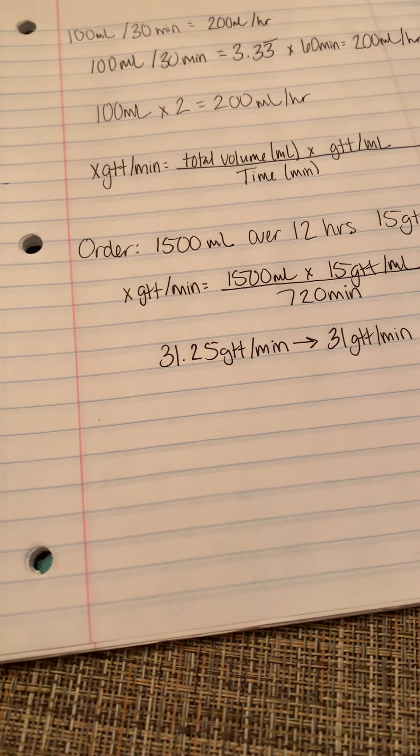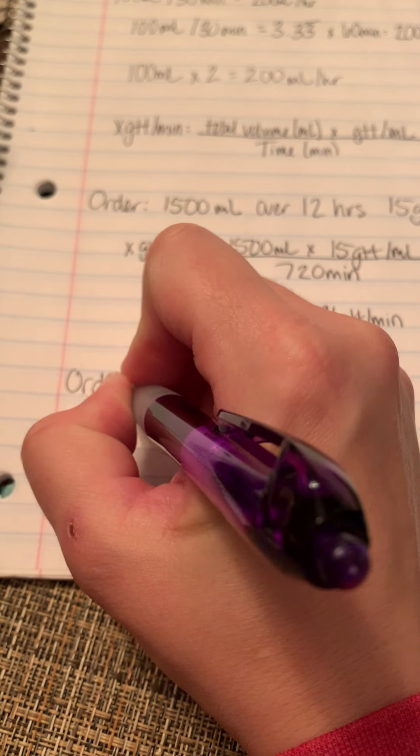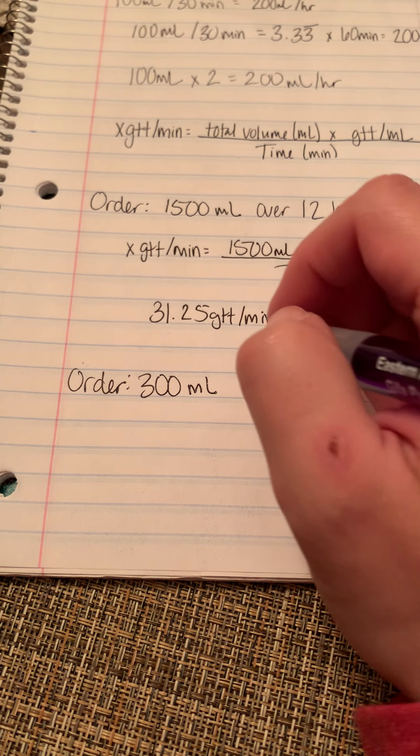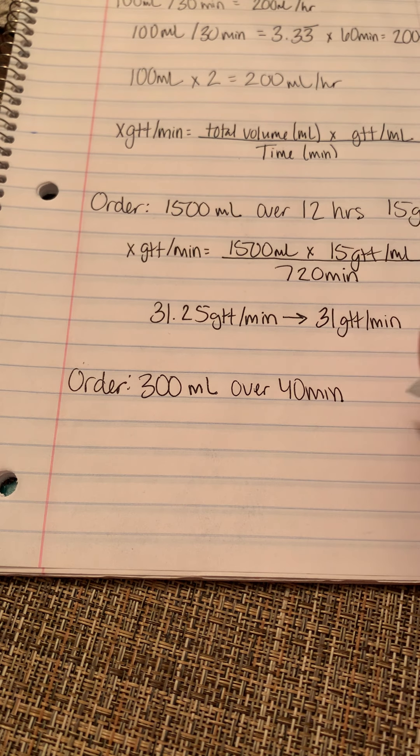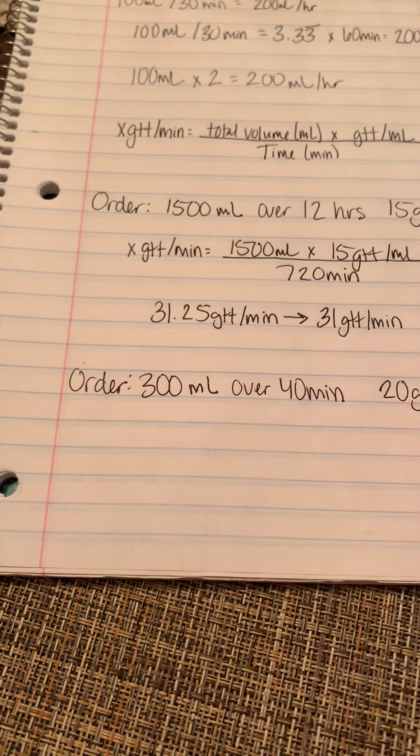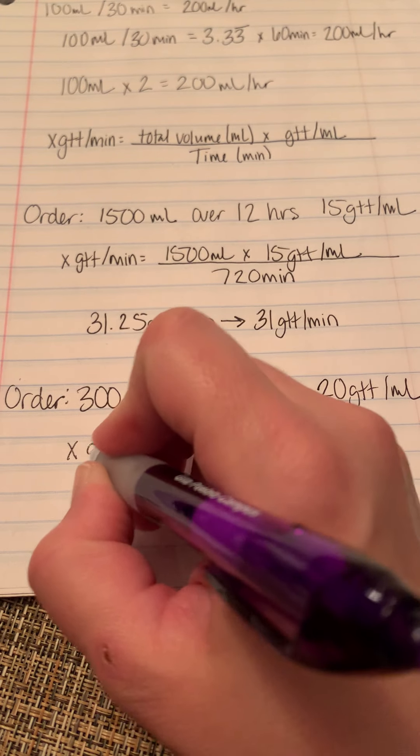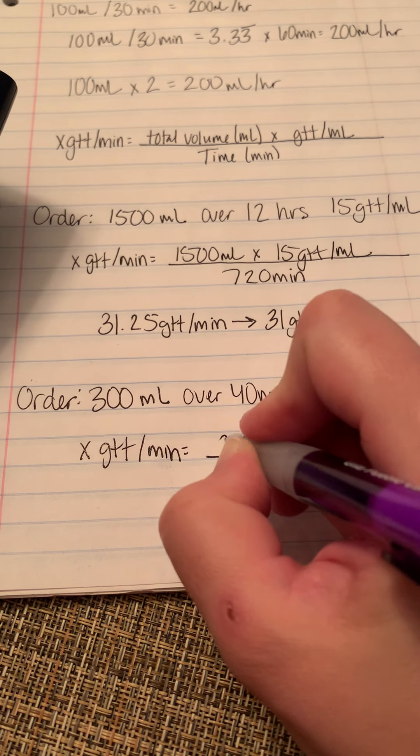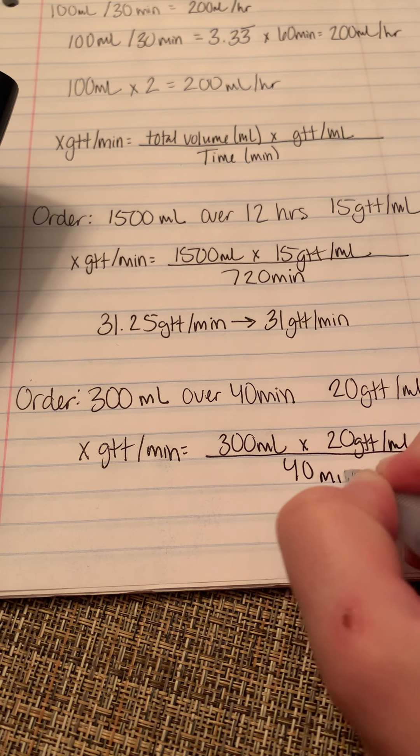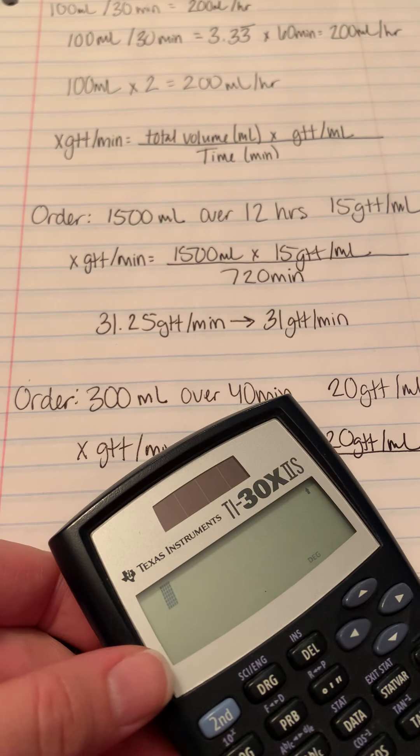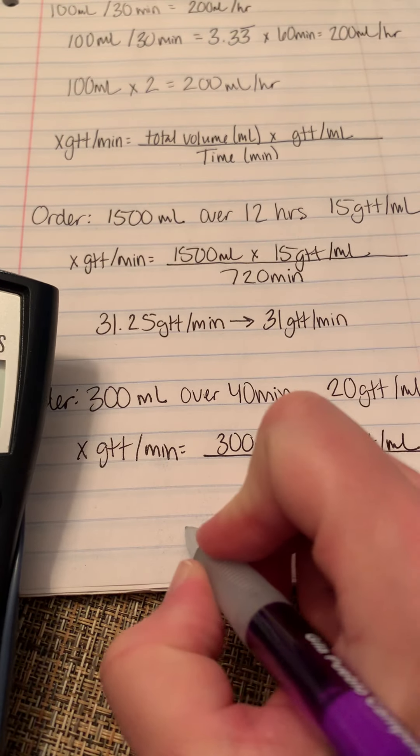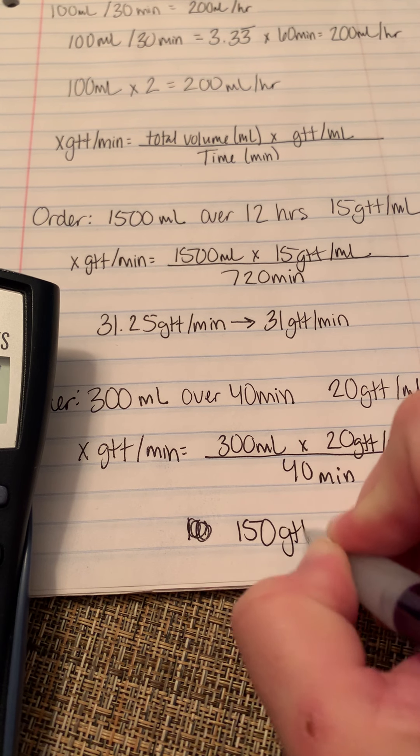Let's do another one. If I have an order for 300 milliliters to infuse over 40 minutes, and my drop factor in my tubing is 20 drops per milliliter, I'm going to just plug it into the formula. So X drops per minute equals my total volume of 300 milliliters times my tubing, 20 drops per milliliter tubing over 40 minutes. Plug that into the calculator. So 300 times 20 divided by 40 and I get 150 drops per minute.